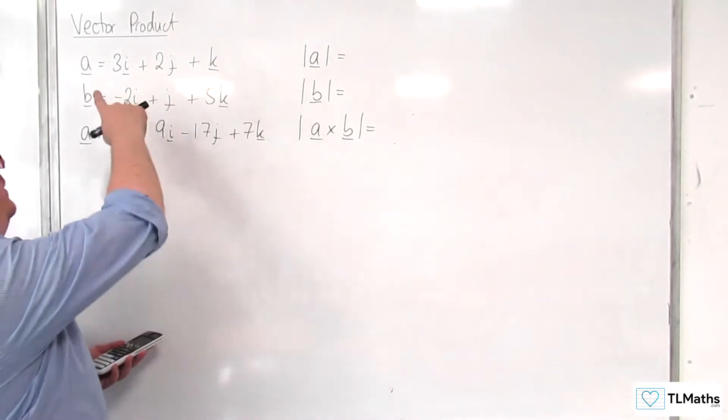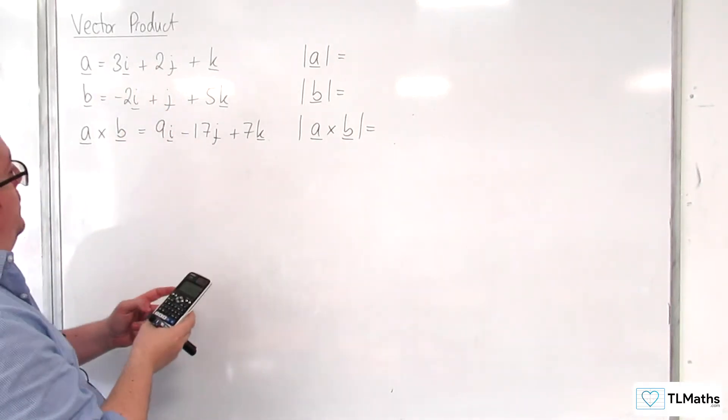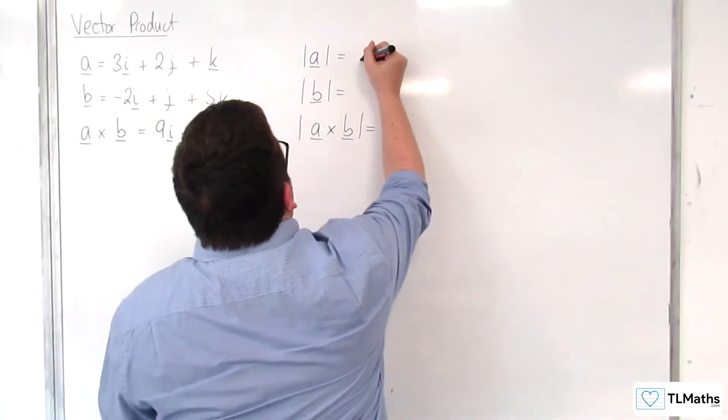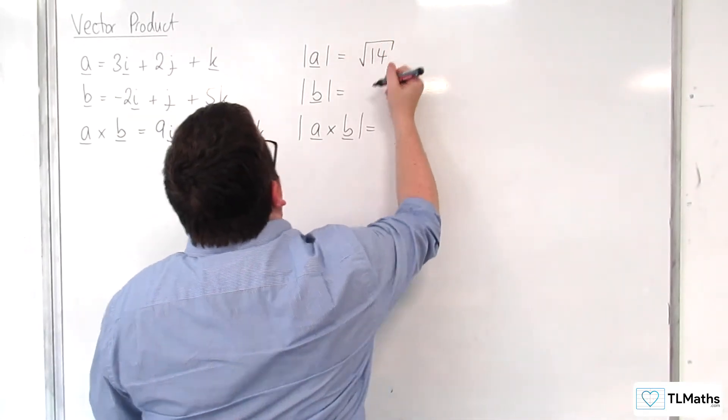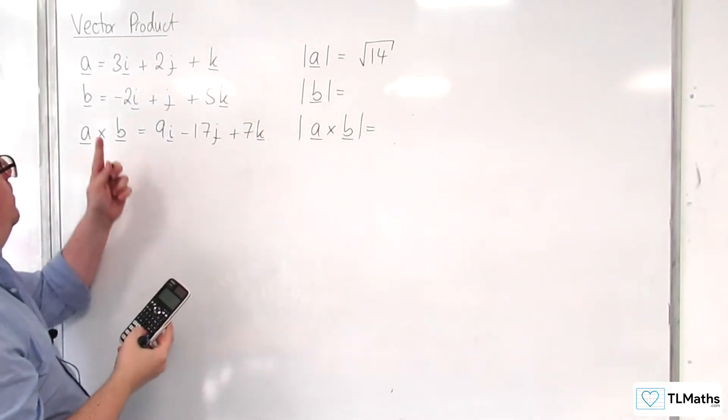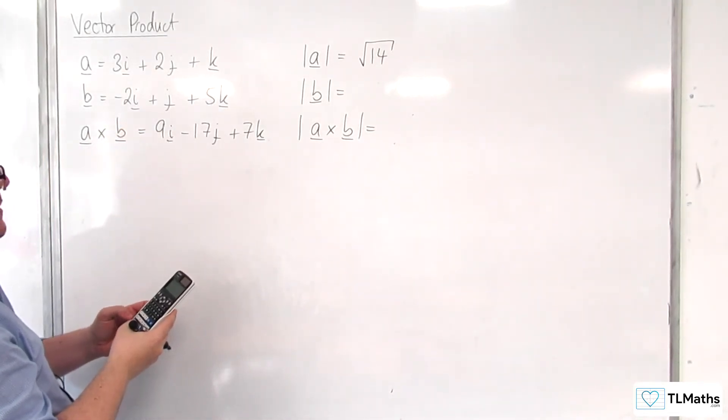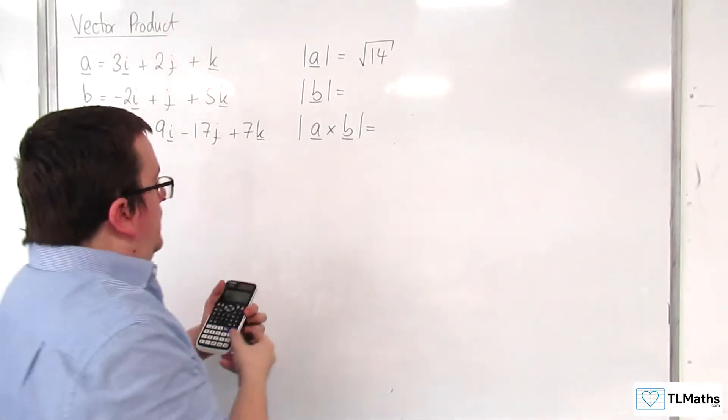So, for the length of A, we would have the square root of 3 squared plus 2 squared plus 1 squared. So, that's root 14. And then the length of B would be the square root of minus 2 squared plus 1 squared plus 5 squared. So, that's root 30.